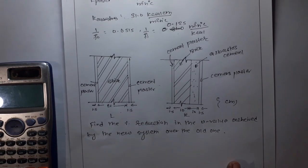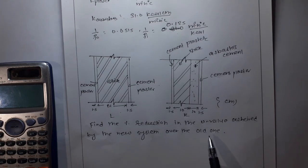The question is: find the percentage reduction in the U value achieved by the new system.